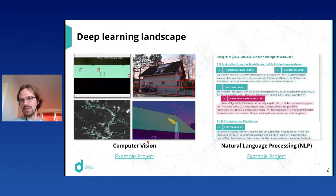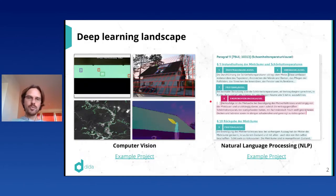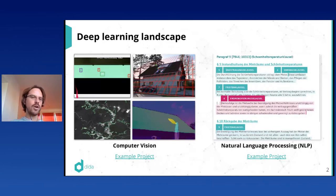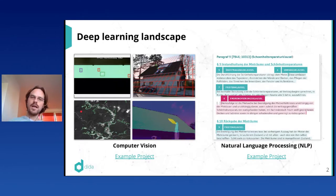There are basically two camps in deep learning: natural language processing and computer vision. A typical NLP application could be to understand legal documents or contracts and classify their sections. Examples of computer vision applications could be looking for manufacturing defects in technical components, or remote sensing — analysis of satellite imaging to look for small-scale mines. Those were all projects we developed for clients at Dida.